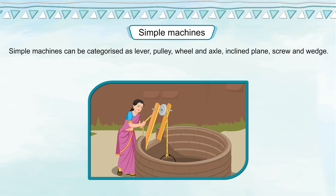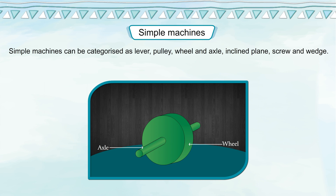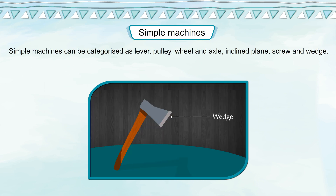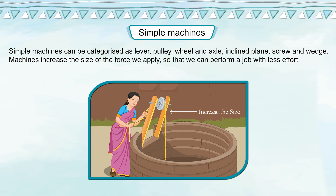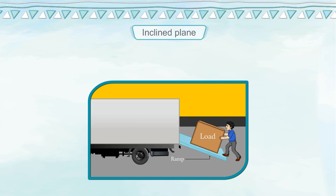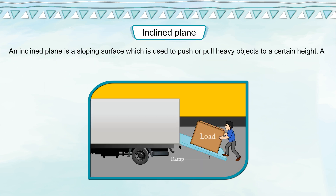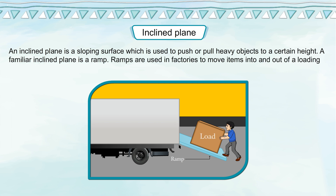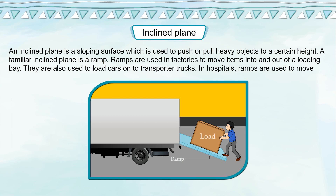Simple machines can be categorized as lever, pulley, wheel and axle, inclined plane, screw and wedge. Machines increase the size of the force we apply so that we can perform a job with less effort. An inclined plane is a sloping surface which is used to push or pull heavy objects to a certain height. A familiar inclined plane is a ramp. Ramps are used in factories to move items into and out of a loading bay, and to load cars onto transporter trucks. In hospitals, ramps are used to move stretchers and wheelchairs.